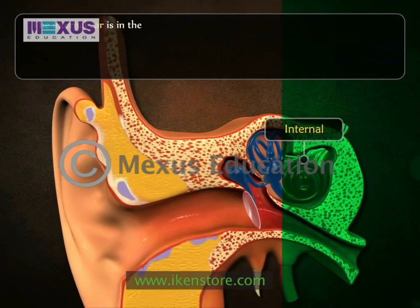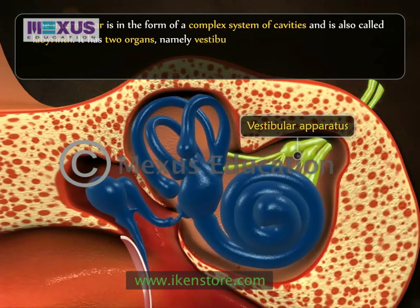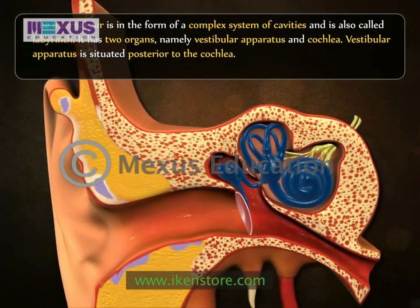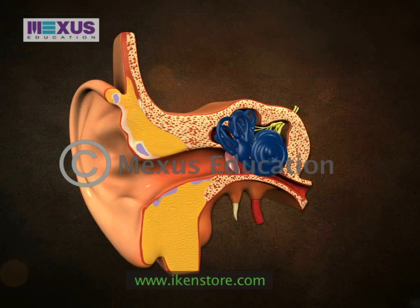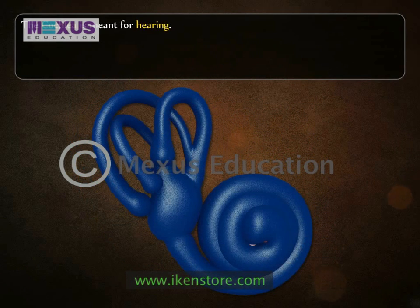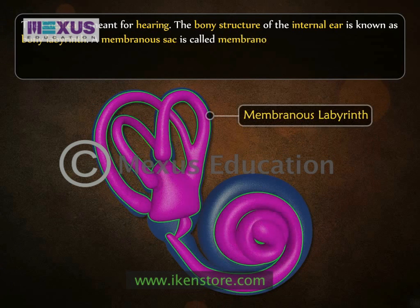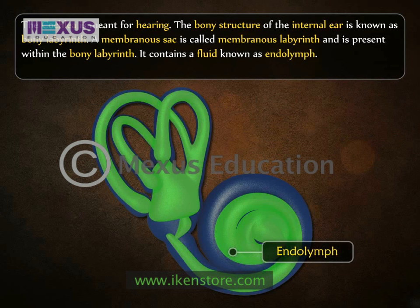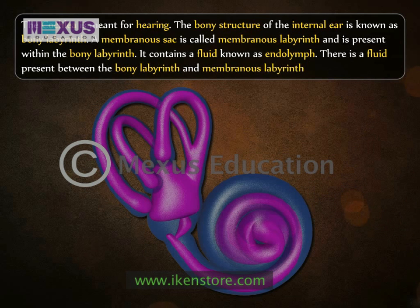The internal ear is in the form of a complex system of cavities and is also called the labyrinth. It has two organs, namely the vestibular apparatus and cochlea. Both are situated within the membranous labyrinth, a membranous sac present within the bony labyrinth containing endolymph. There is also a fluid called perilymph present between the bony labyrinth and membranous labyrinth.